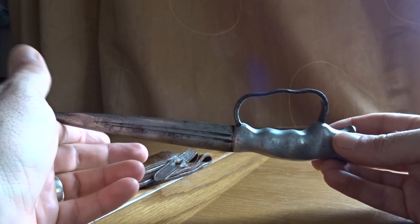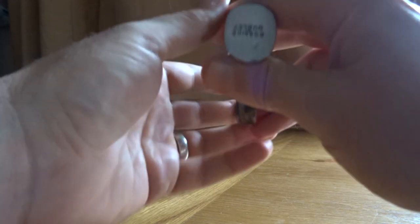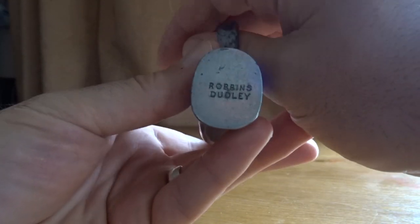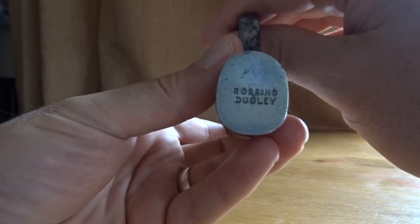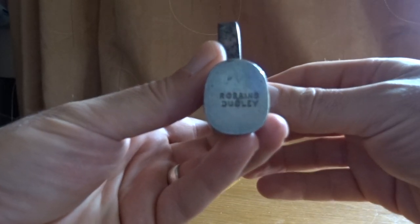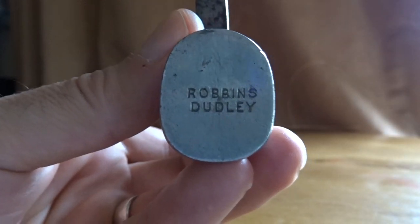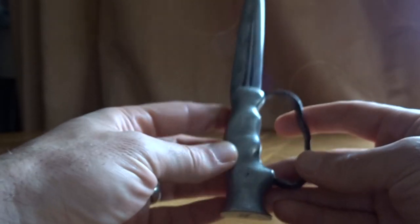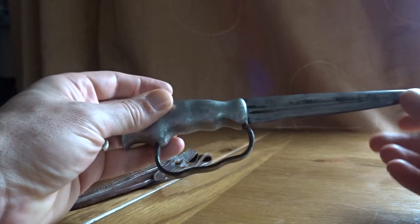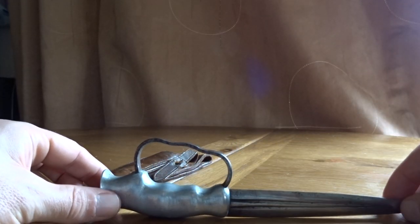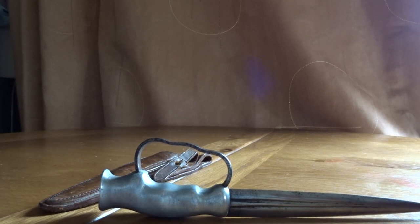Now again, as you can see, perfectly punched Robins Dudley, again never engraved, always punched. Beautiful punch. I hope you can see that clearly. This really is a beautiful, beautiful blade and a beautiful knife to have as a private purchase.